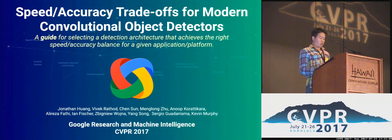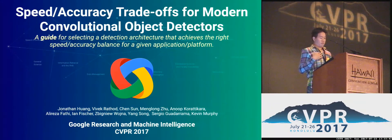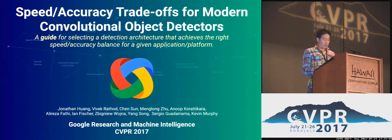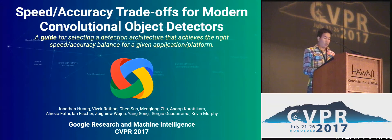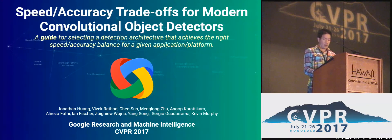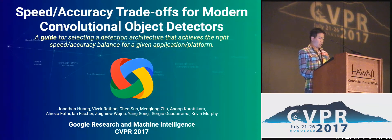Hi, my name is John Huang, and I work on the object detection team at Google. Our paper, 'Speed Accuracy Trade-offs for Modern Convolutional Object Detectors,' is written for practitioners who would like to deploy object detection in a real application.